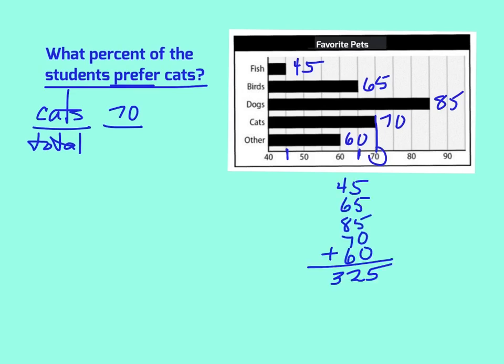So the total is 325 votes. Now, rather than just dividing 70 by 325, let's reduce this fraction. We could reduce by fives, so that would give us 70 divided by 5 is 14, and 5 goes into 325 65 times. So let's work that problem instead. 14 divided by 65.